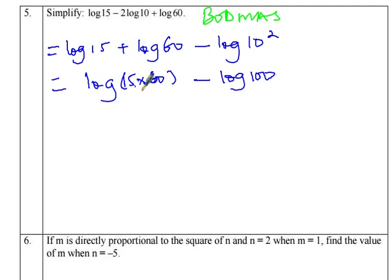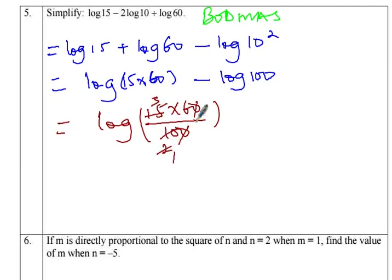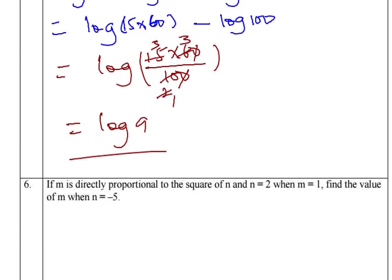Now I focus on the subtraction. When subtracting two logarithms we write one logarithm and divide the numbers. So I divide 900 by the other number. Feel free to use your calculator for this step. When I simplify, I end up with log base 10 of 9. That is the final answer for that question.